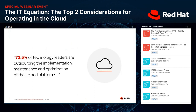We've done lots of research and surveys. 73.5% of technology leaders are outsourcing the implementation, maintenance, and optimization of their cloud platforms. When we talk about outsourcing today, we're really talking about shifting to things like cloud services and managed offerings — just as SaaS has become very pervasive in the marketplace. As an enterprise, I typically use Microsoft Office or Google Suite for email, or Salesforce for CRM, consuming technology rather than building and maintaining everything around it.